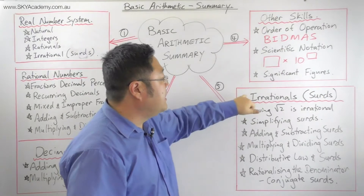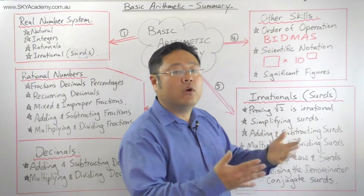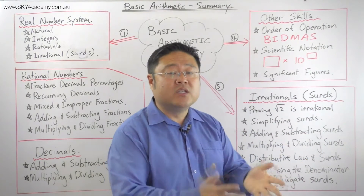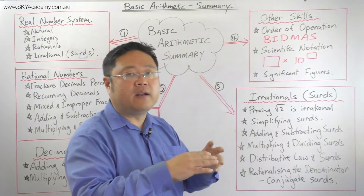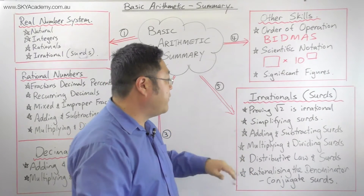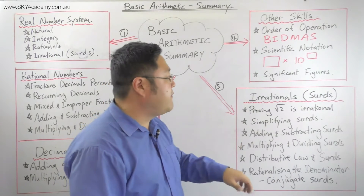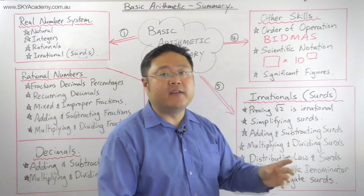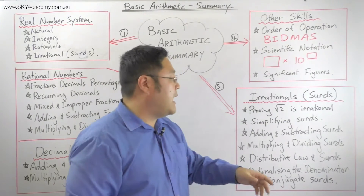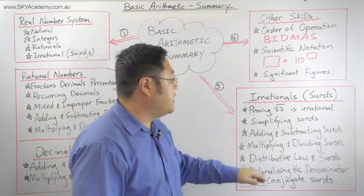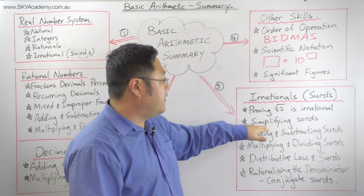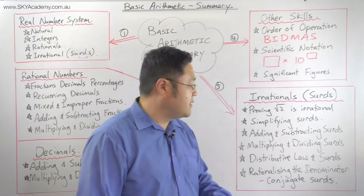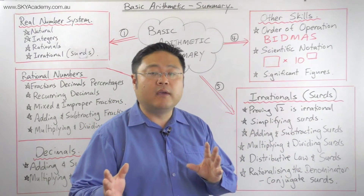Finally, we looked at irrational numbers. The main form we studied was surds — numbers that are square rooted, cube rooted, or rooted in some way. We proved that surds are irrational by showing that root two is irrational. We learned to simplify surds by taking out whole number square factors, and to add, subtract, multiply, and divide surds.